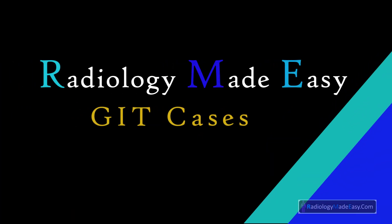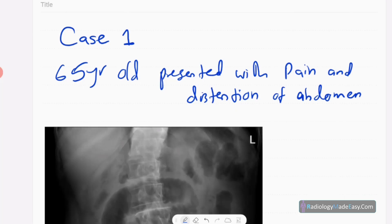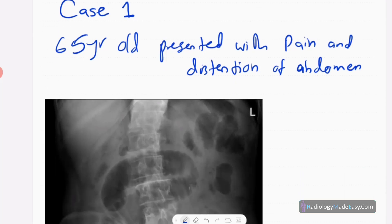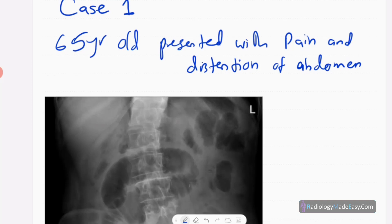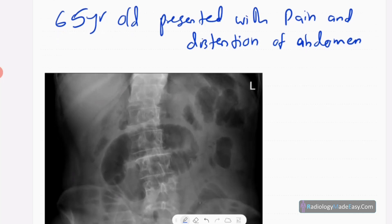Hello everyone, welcome back to Radiology Med Easy, your all-time favorite YouTube channel. Today's case is a 65-year-old patient presenting with pain and distension of the abdomen, with a subacute type of onset.